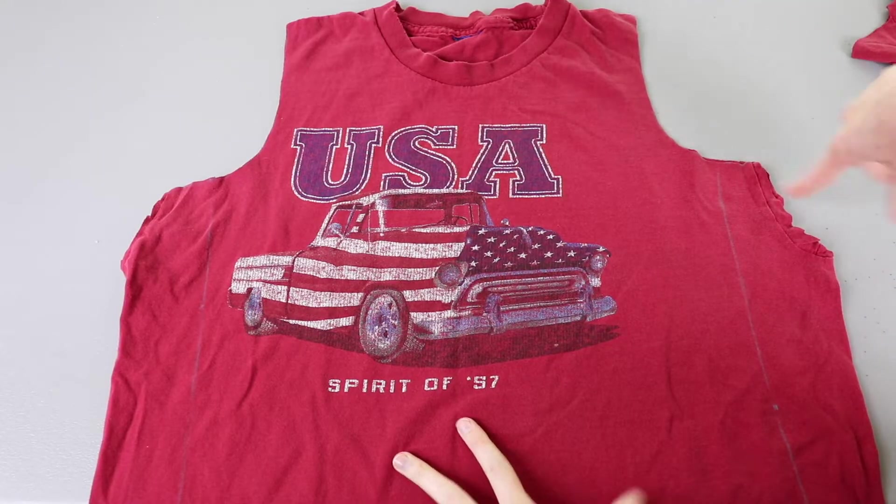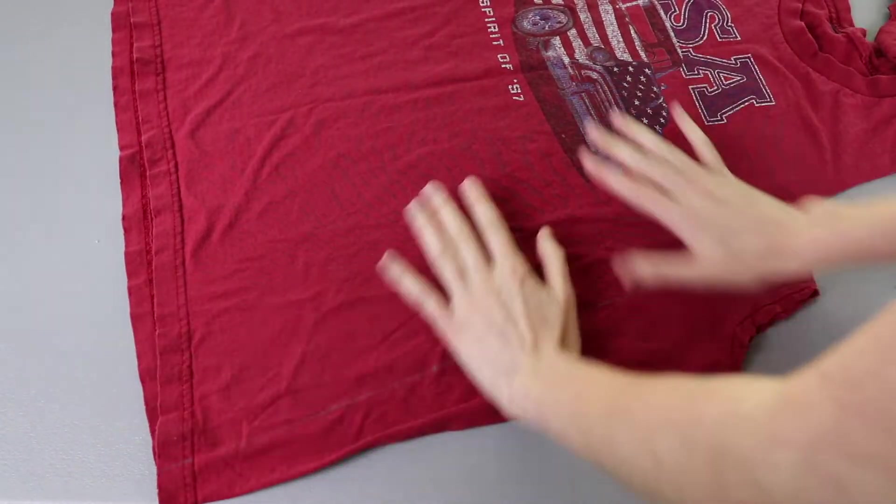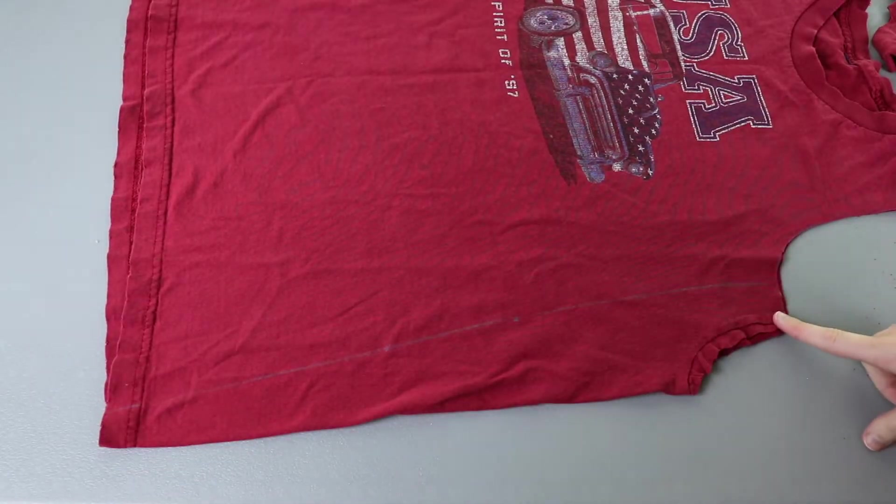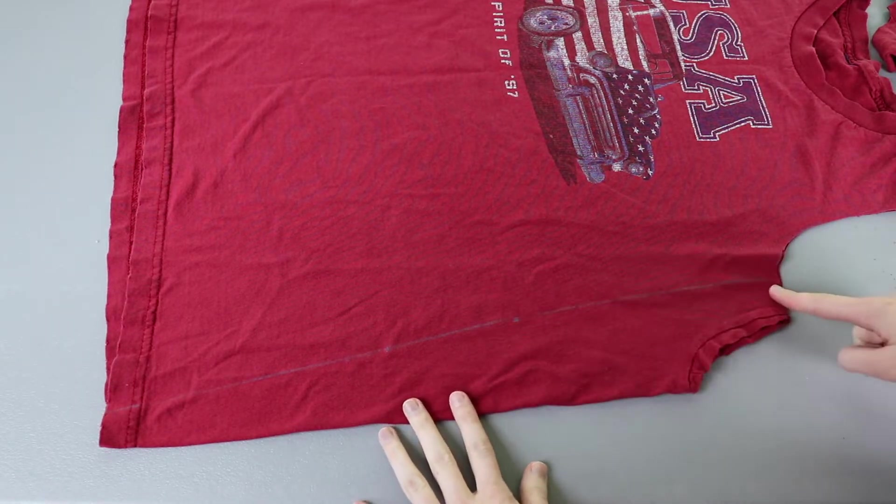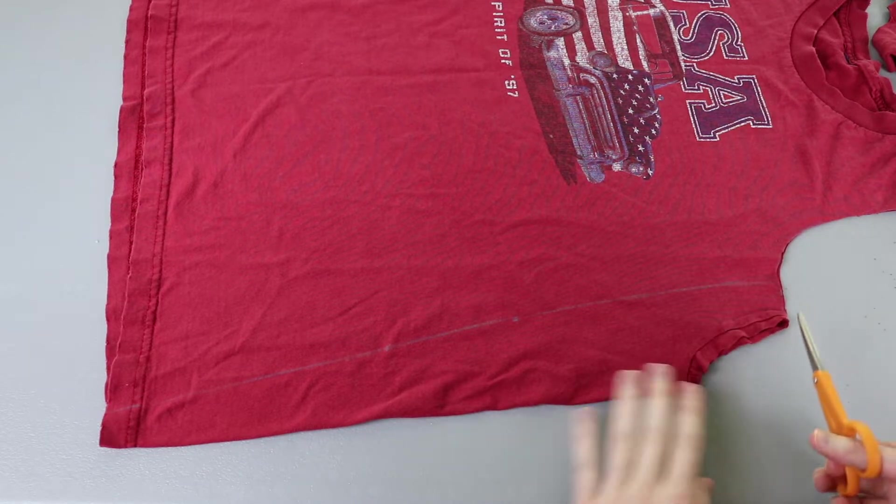So now that we have our armholes cut it's time to do the sides and I'm going to do the sides one at a time because I think it just makes it easier if you do all the steps for one side all at once before going to the next side. So with this part we're going to basically cut tails that we're then going to tie down the side and we're going to use this line here as a guide. That's how far in we're going to cut. But it's pretty straightforward.